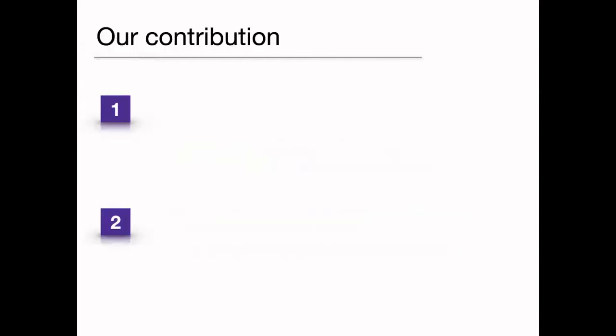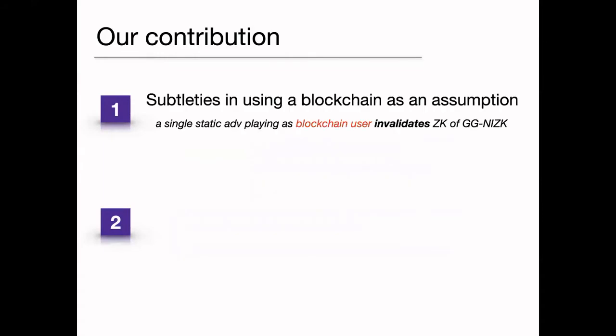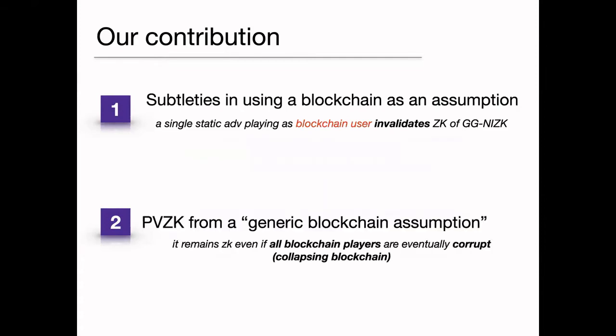The contributions of this talk are two. First, we are going to see that some subtleties can arise when using the blockchain as an assumption. Moreover, we are going to see how to construct a publicly verifiable zero-knowledge proof system from a generic blockchain, and this protocol will remain zero-knowledge even when all the secrets of the honest players are revealed and the blockchain collapses.